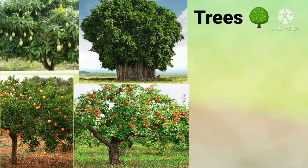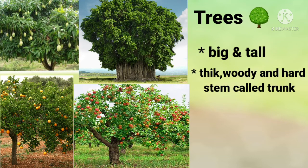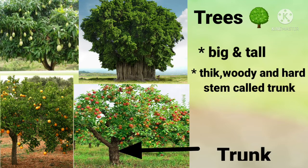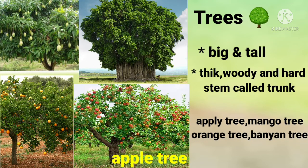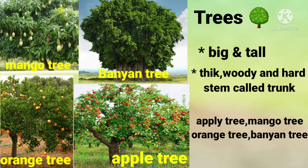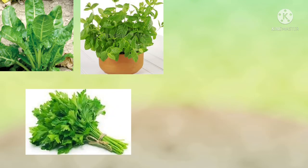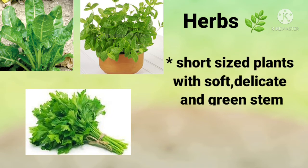Let's discuss all types of plants one by one. These are trees. Trees are big and tall plants. They have a very thick, woody, and hard stem called a trunk. The lifespan of trees is very large. Some examples of trees are the apple tree, mango tree, orange tree, and banyan tree.